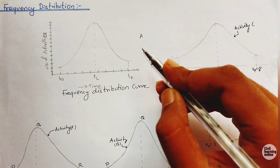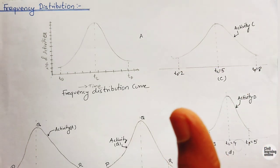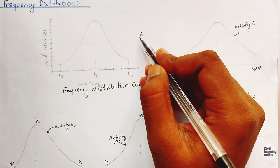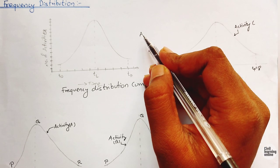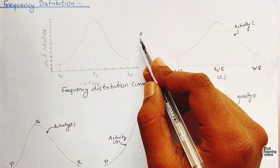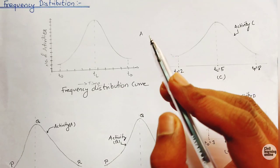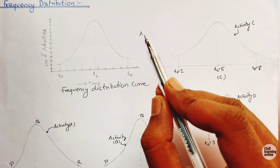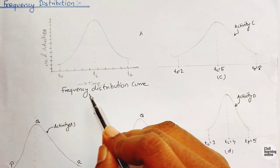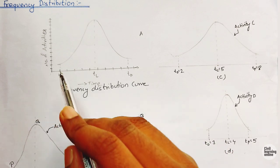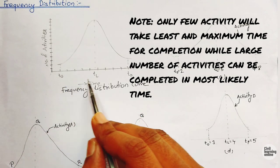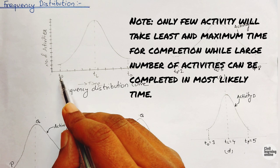Most likely time is the most traveled time in which the maximum number of activities are completed. Considering activity A to be completed under some condition: if we are able to complete this activity in a short period of time, that is our optimistic time. If nothing goes as per our plan, this activity may require much more time — that will be our pessimistic time. If we draw a graph of activity A, we will have a frequency distribution curve, which is plotted between the number of activities and the time.